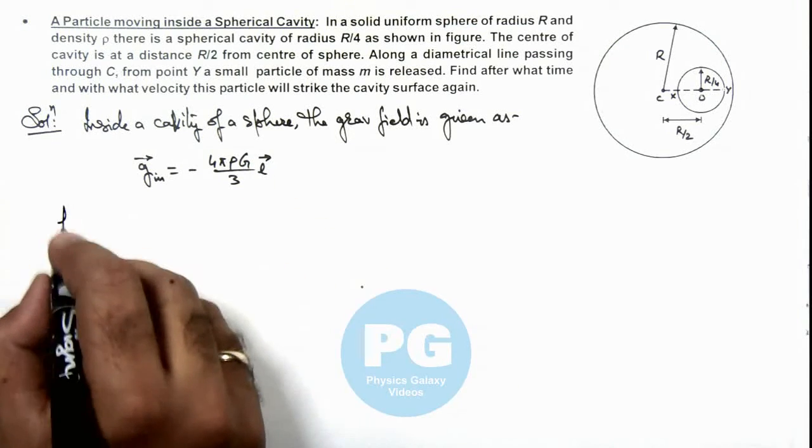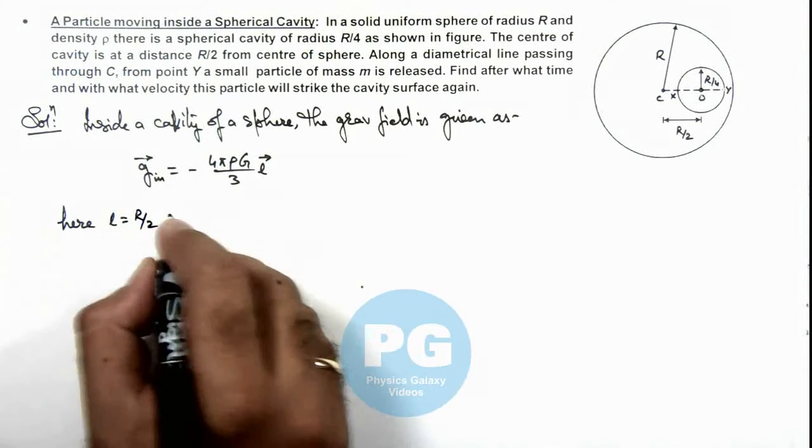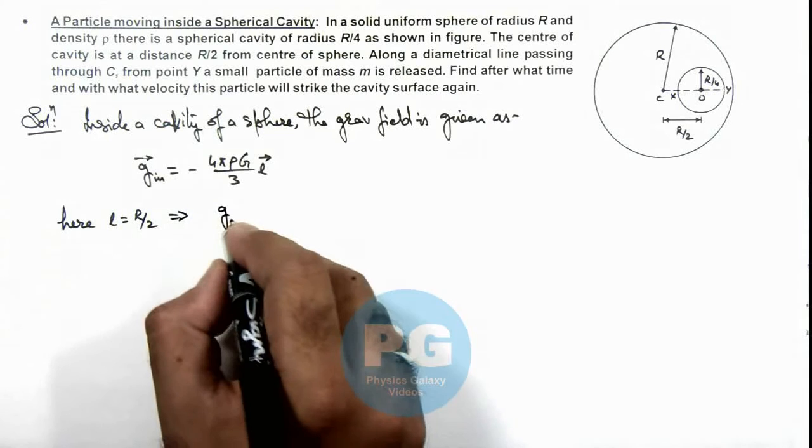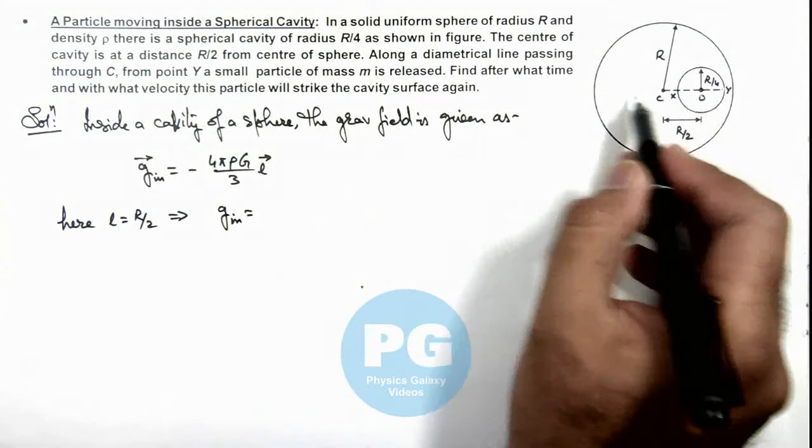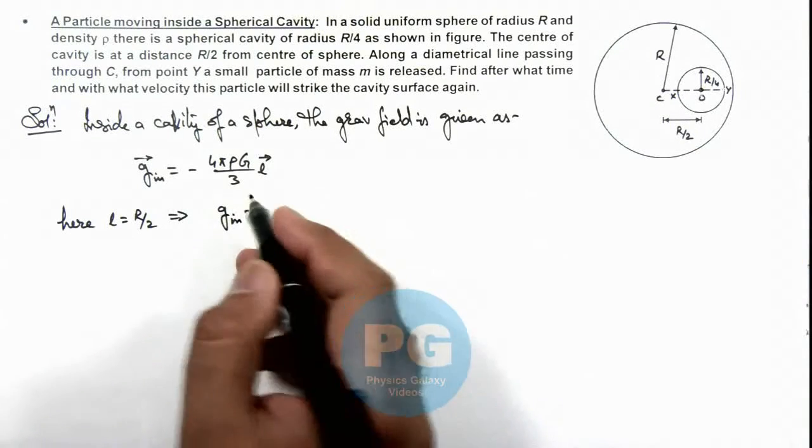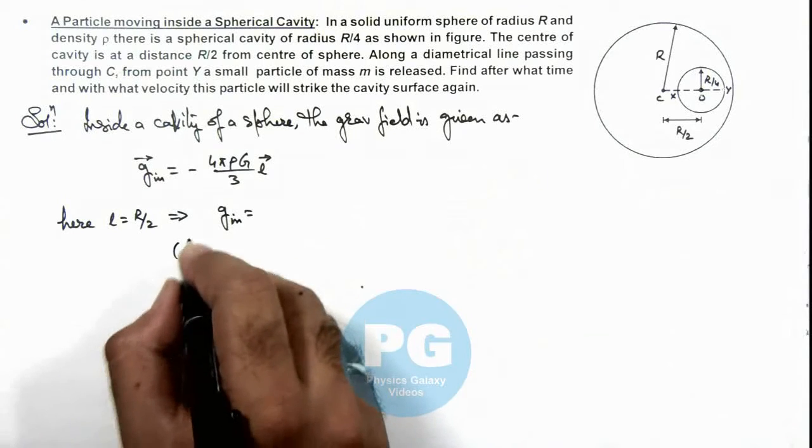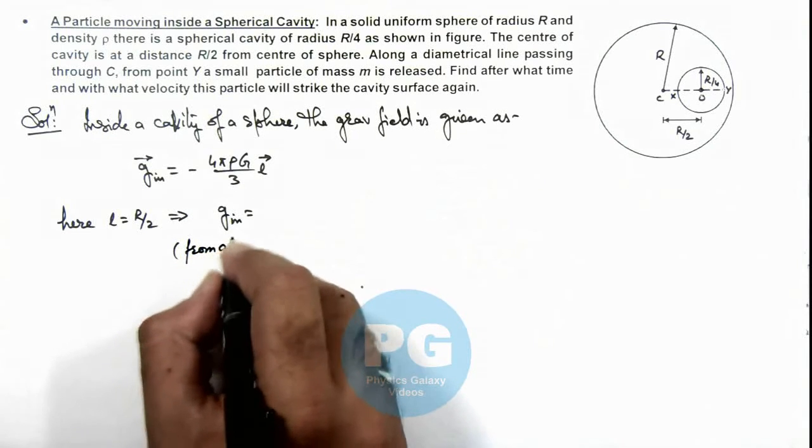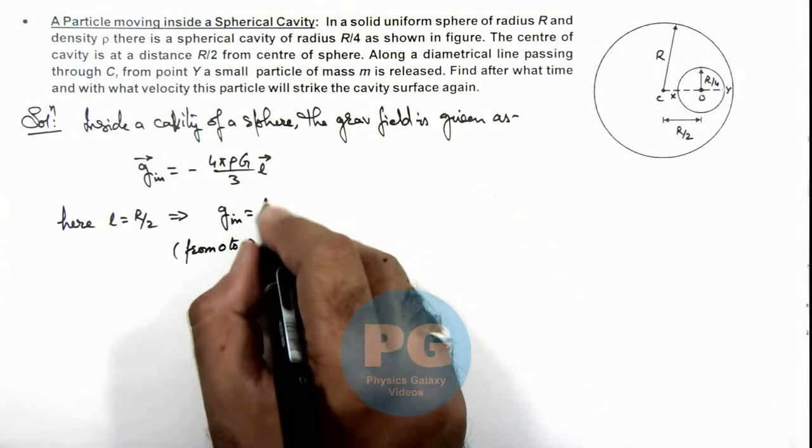So here you can see the value of l is equal to R/2. This implies g inside can be given as—this would be from O to C, so we can eliminate the vector value and we can choose the direction inward, from O to C.